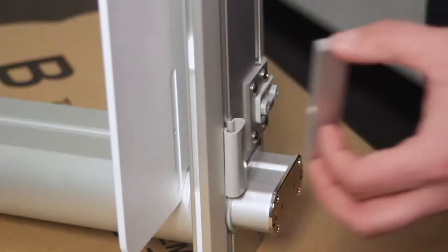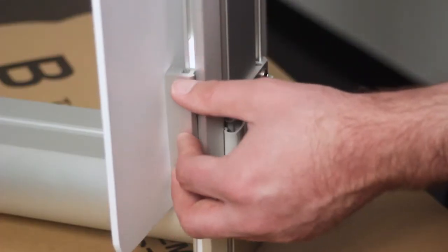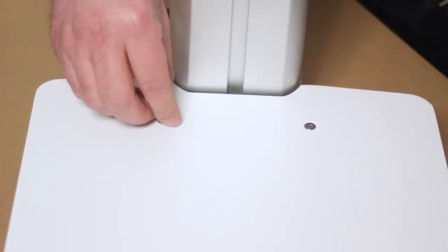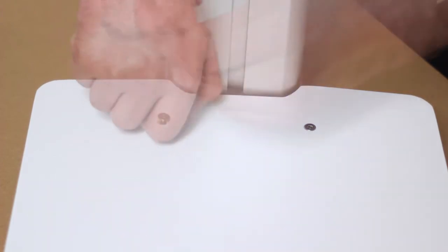Step 3. Insert the unattached work surface track into the opposite plastic guide on the column arm and attach using the screw you removed in Step 1.